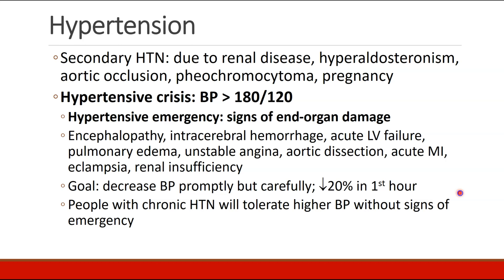A hypertensive crisis is defined as a blood pressure greater than 180 systolic or 120 diastolic. A hypertensive emergency is not based on a number, but it's based on signs of damage to organs. Any organ being damaged by high blood pressures would be an example: encephalopathy, cerebral hemorrhage, acute heart failure, pulmonary edema, unstable angina, aortic dissection, acute MI, eclampsia, and renal insufficiency.